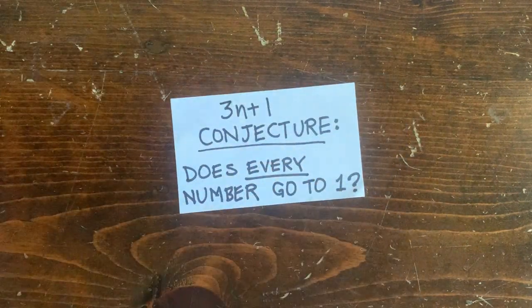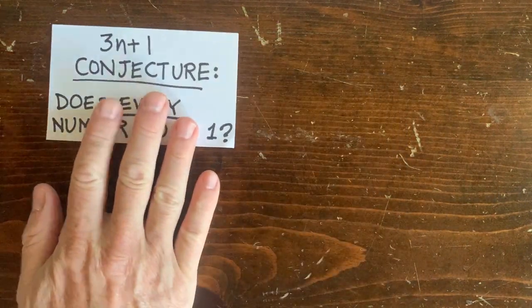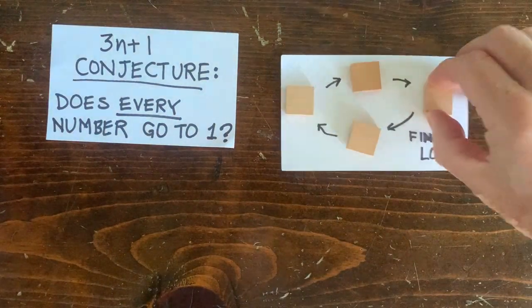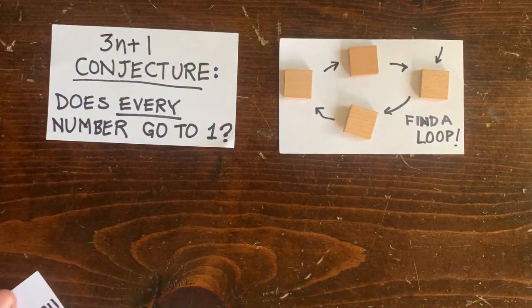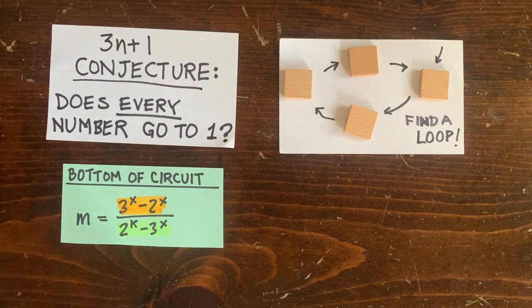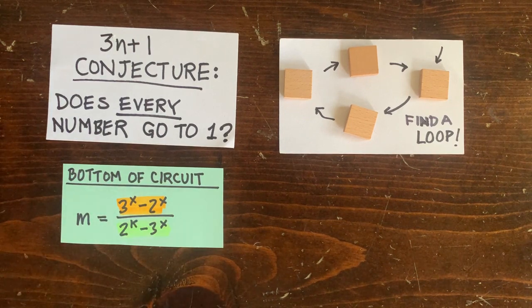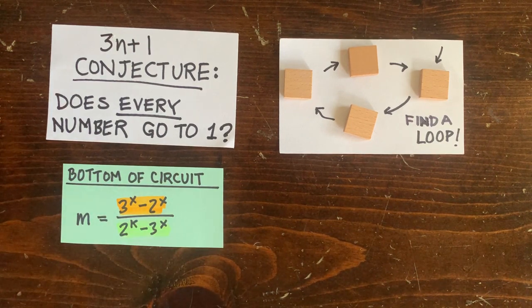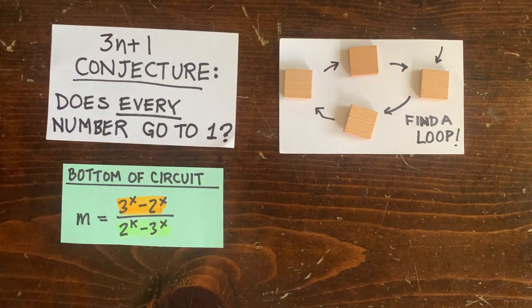Okay, first a little recap of what we did earlier for the 3n plus 1 circuit problem. Suppose we have a circuit of length k that starts with x odd numbers. The bottom member of this circuit takes the form 3^x minus 2^x over 2^k minus 3^x. And we showed that's never an integer, no matter what x and k are.